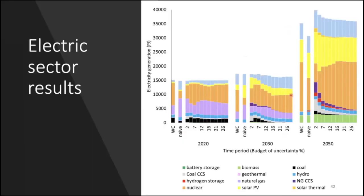These are very useful optimization frameworks commonly used in research for a variety of contexts given the uncertainty we face, especially in long-term planning but also in operations — such as committing reserve products and dealing with forecast errors in wind, solar, and demand. Consider whether using one of these methods might be something you want to tackle in your term projects, especially if the area you're studying has risk-averse characteristics or well-known probability distributions for various outcomes.